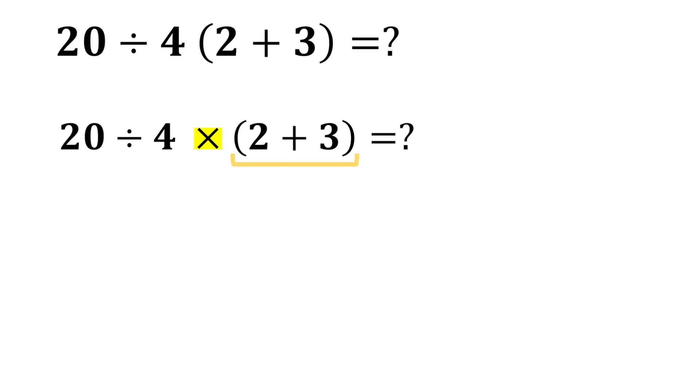According to PEMDIS, we must first solve the parentheses. The expression becomes 20 divided by 4 multiplied by 5. According to PEMDIS, if we move from left to right, we first reach division, so we must perform the division first and then the multiplication.